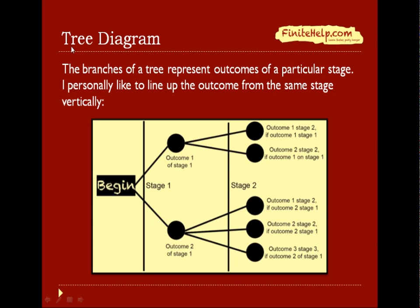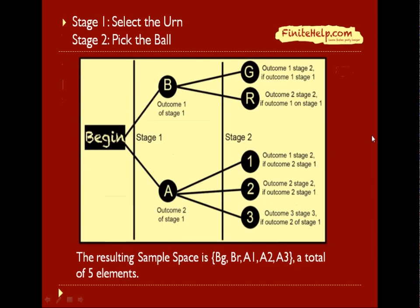First let's go over the basics of a tree diagram. The branches represent the outcomes of a particular stage. I personally like to vertically line up each stage to make it more organized. You can see branches representing possible outcomes of stage 1 and more branches branching off to represent outcomes of stage 2. Without further ado, let's do our problem.